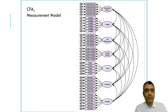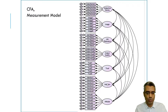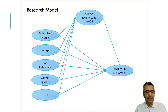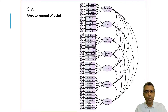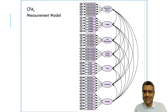The focus here is on the measurements — how we measured subjective norms, how we measured image, how we measured job relevance, and so on. Because the path effects of these factors on attitude, and the effect of attitude on intention, are not our concern in the measurement model. Since the focus is on measurement, we just covariate all of these factors.